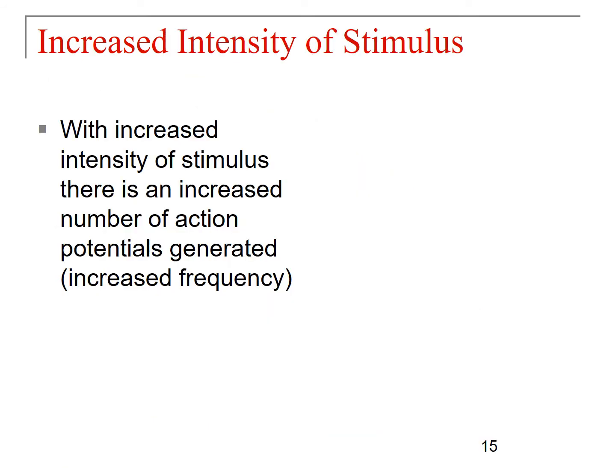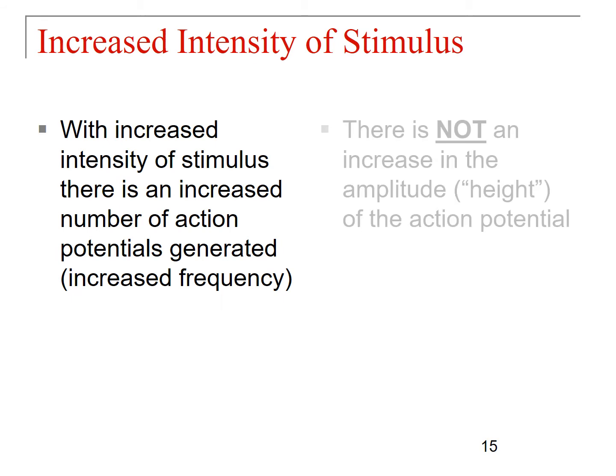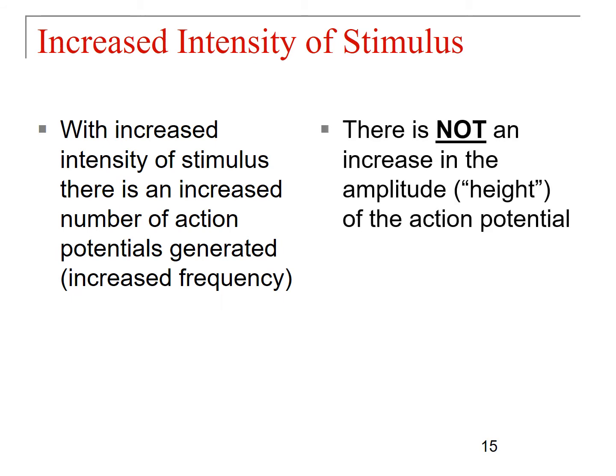Anytime you have an increased intensity of stimulus, there is an increased number of action potentials generated. There is not an increase in the size or height of the action potential. Action potentials in neurons always go from negative 70 to positive 30, back down to negative 70, with hyperpolarization down to about negative 90, and they all look the same in terms of voltage.